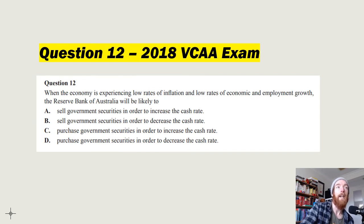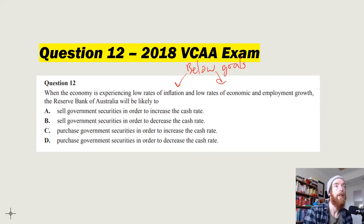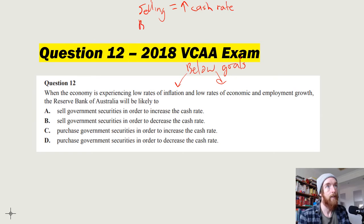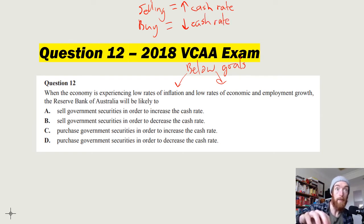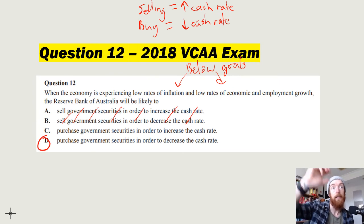Question 12 from the 2018 VCAA exam: 'When the economy is experiencing low rates of inflation, low economic growth, and low employment growth, the RBA is likely to...' All indicators are below target, so they want to stimulate — lower the cash rate. Remember: selling equals higher cash rate; buying equals lower cash rate. If they buy government securities, money goes into the short-term money market, increasing liquidity and decreasing the cash rate. Answer: D — purchase government securities.